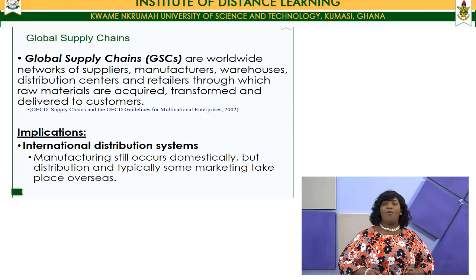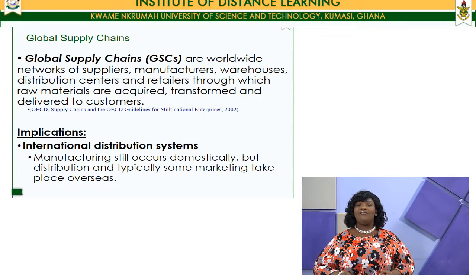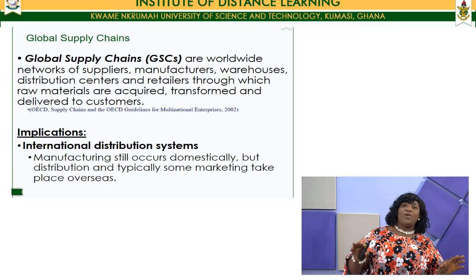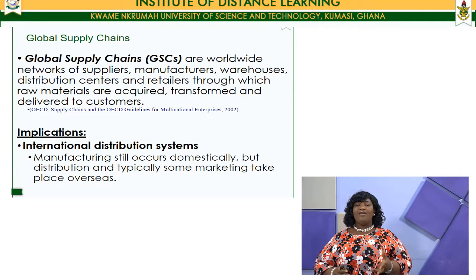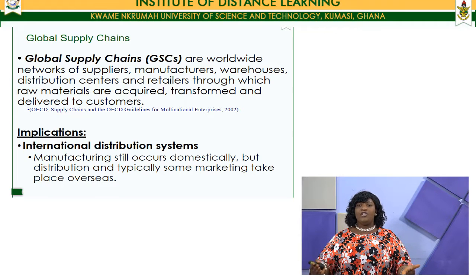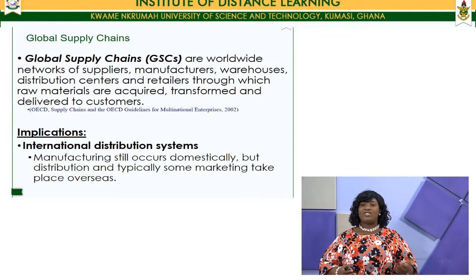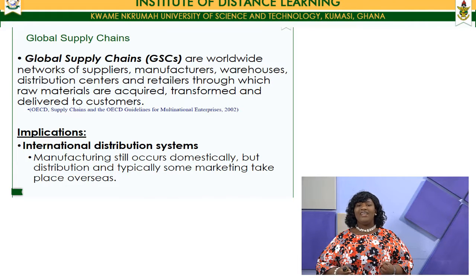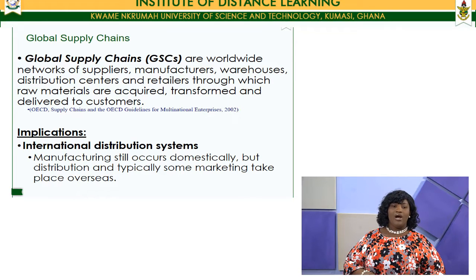Global supply chains are worldwide networks of suppliers, manufacturers, warehouses, distribution centers, and retailers through which raw materials are applied. We are looking beyond national borders — suppliers may be located in different countries, manufacturers in different countries, distribution centers in different countries, and customers across the global environment. Global supply chains are really an extended form of local supply chains, but with partners extending far beyond the domestic market.